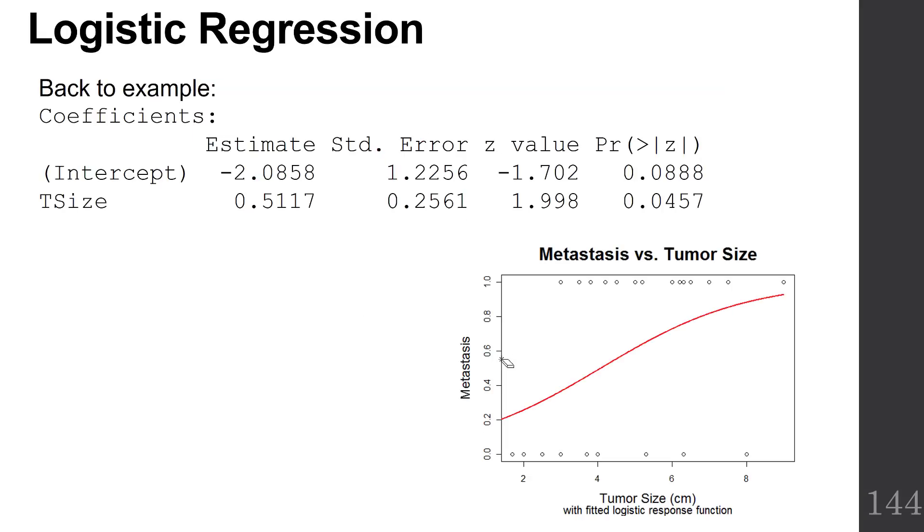We ran a logistic regression using our metastasis data set. You can see that our kind of S-shaped curve, it's a little bit flat, but you can see that it has sort of an S-shape on our graph. I went ahead and plotted it on the graph. It's pictured over there.